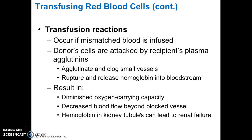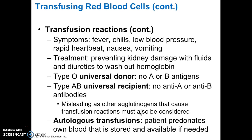Transfusion reactions occur if mismatched blood is infused. The donor cells are attacked by the recipient's plasma agglutinins — they agglutinate and clog small vessels, then rupture and release hemoglobin into the bloodstream. This results in diminished oxygen-carrying capacity, decreased blood flow beyond the blocked vessel, and hemoglobin in the kidney tubules can lead to renal failure. Symptoms of a transfusion reaction include fever, chills, low blood pressure, rapid heartbeat, nausea, and vomiting. The patient is treated by preventing kidney damage with fluids and diuretics to wash out the hemoglobin.